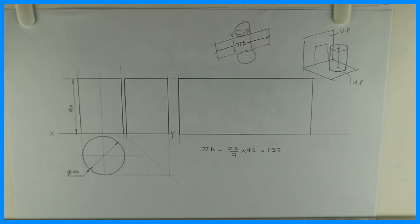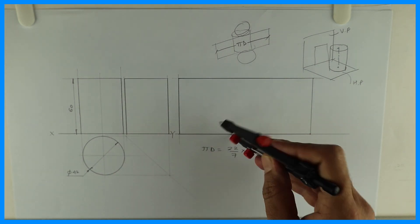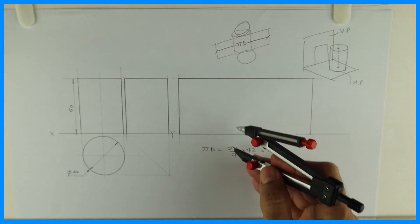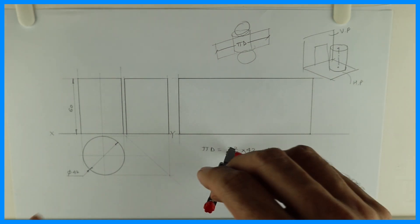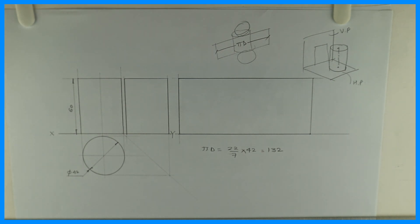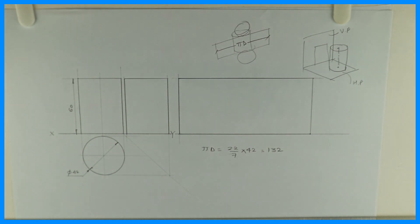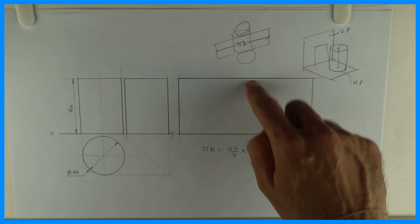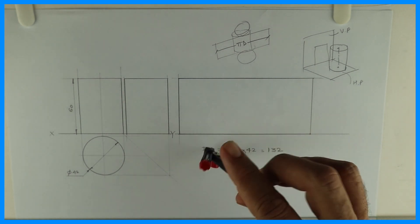But let's say if you want to draw total surface development, so in total what we need to do? We need to draw circle also. We'll take this radius, we can keep it anywhere, here, and we can draw circle. See, this is pi d with height. If I want to draw total development then I have to draw circle, remember that.